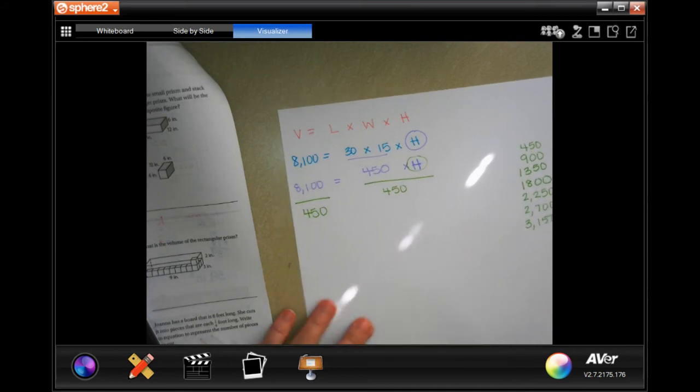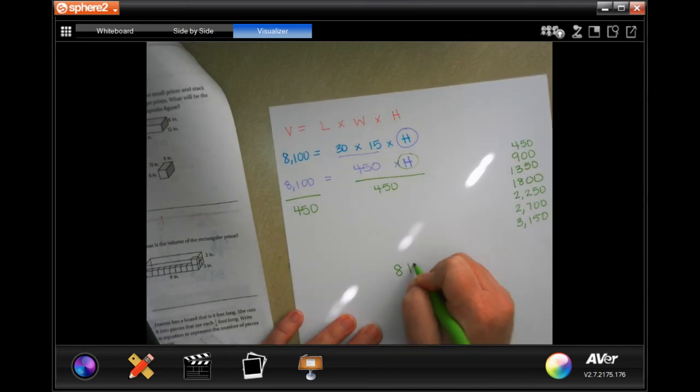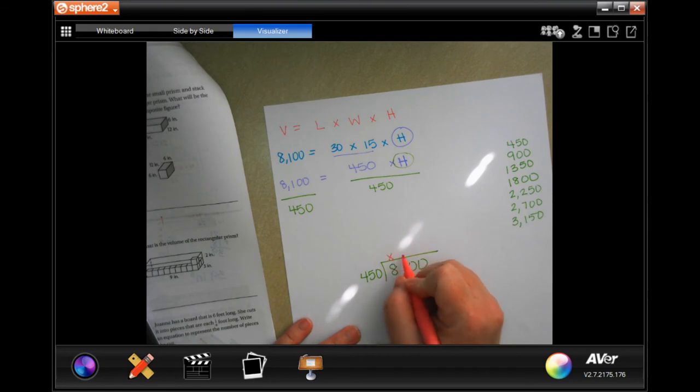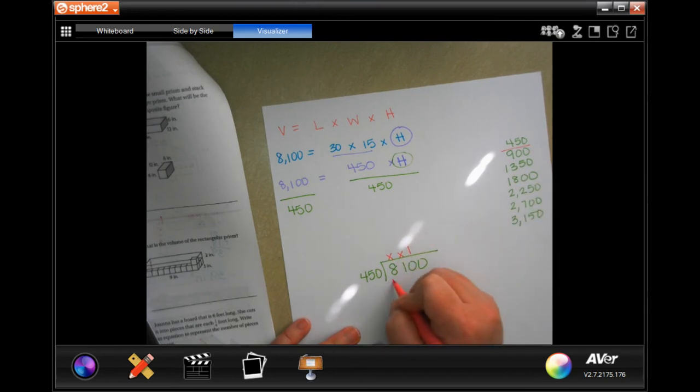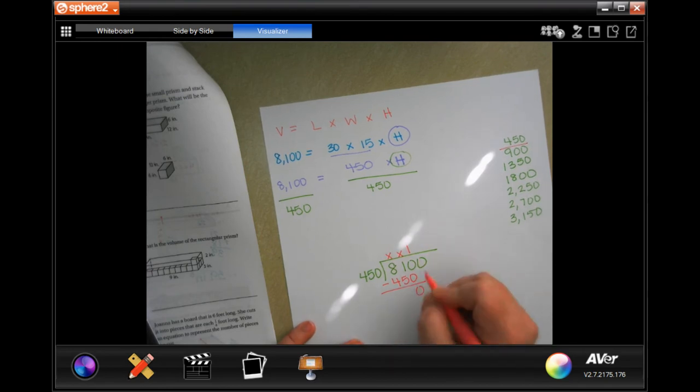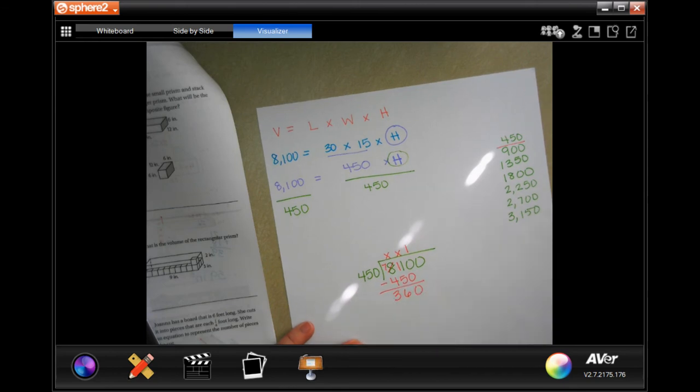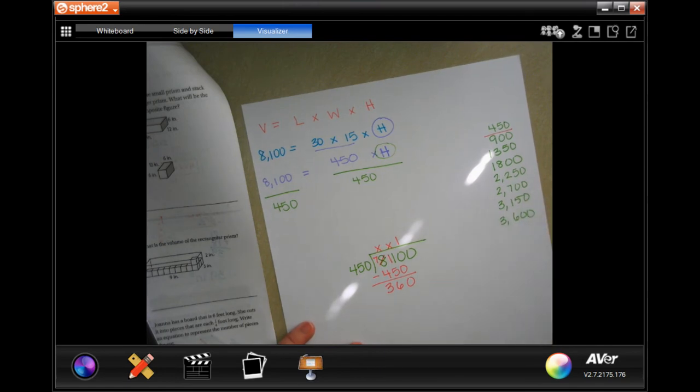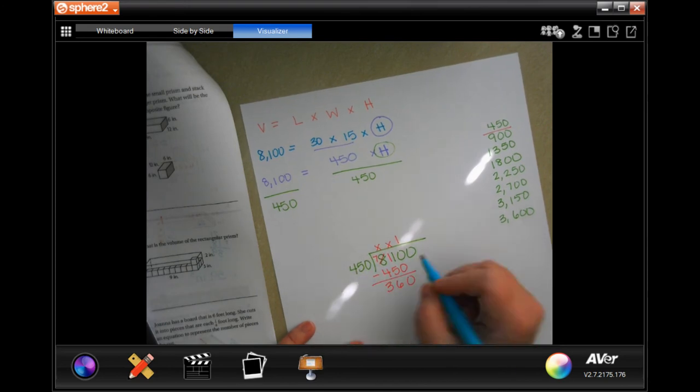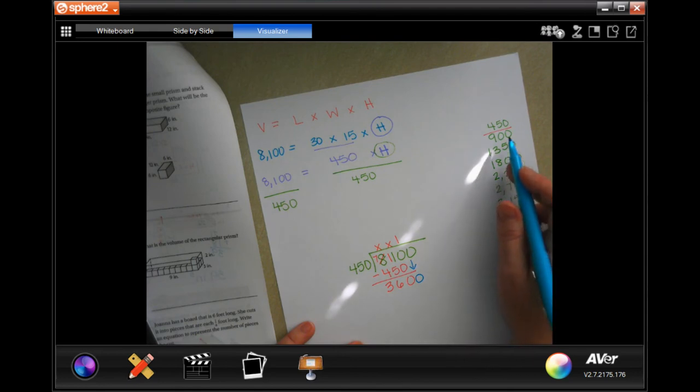8,100 divided by 450. Not into 8, not into 81, into 810 it looks like the closest I can get is just 1. Then we're going to subtract: 360. So now I'm going to do that one more. 360 is smaller than 450, so I'm going to bring down that last zero.